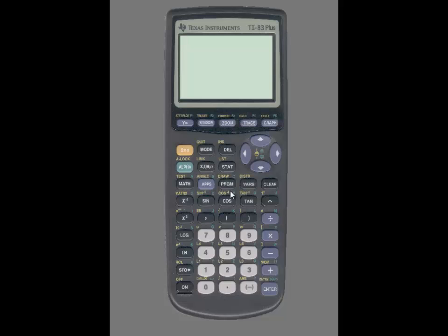To use the calculator, first press STAT, then use the right arrow key to highlight TESTS. Scroll down until you see 2PROP Z test. I am going to go over this function first, and then I will show you how to use the 2PROP Z interval a little later.